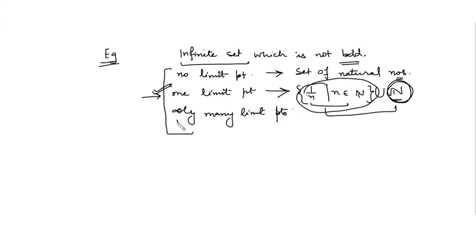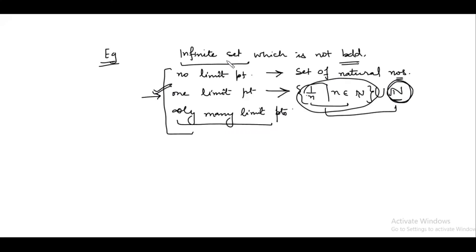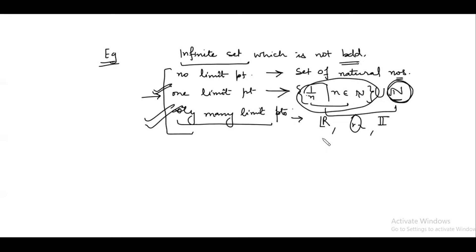For the third case: an infinite unbounded set having infinitely many limit points — this is very simple. You can say the set of real numbers, the set of rational numbers, or the set of irrational numbers, because all are infinite sets, all are unbounded, and all have infinitely many limit points.